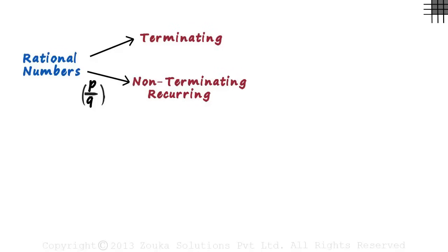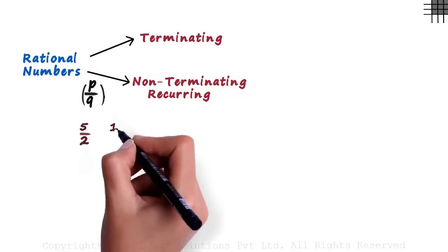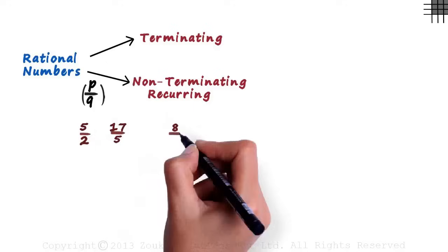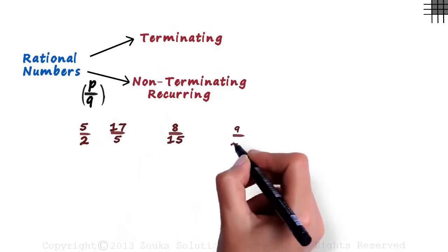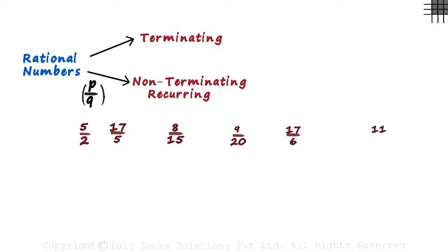We'll look at six rational numbers in the p by q form: 5 by 2, 17 by 5, 8 by 15, 9 by 20, 17 by 6, 11 by 21.